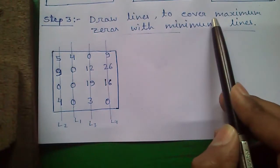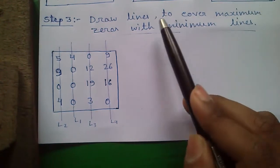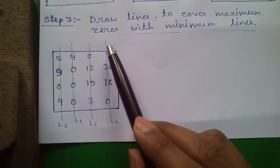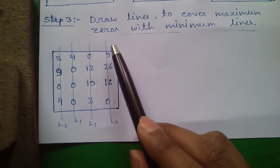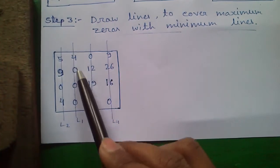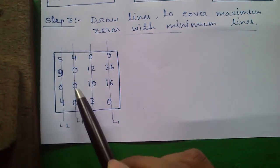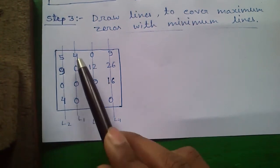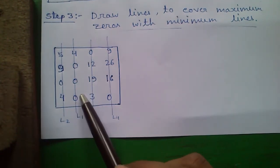We will get our final matrix in which each row and each column has at least one zero. Step 3: draw lines to cover maximum zeros with minimum lines. Next we will draw lines and we will start with that row or column which has maximum numbers of zeros. In column 2 we have three zeros, so we will draw our first line L1 in column 2. Next our target is to cover two zeros.